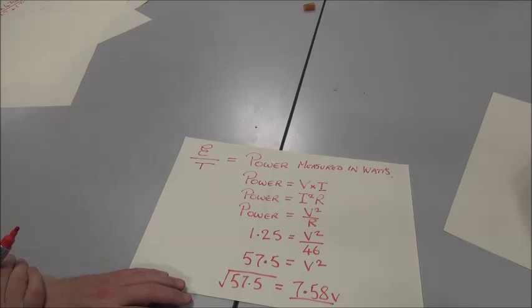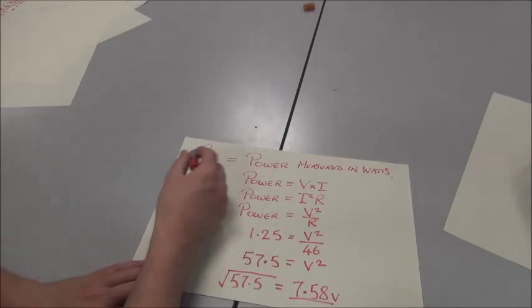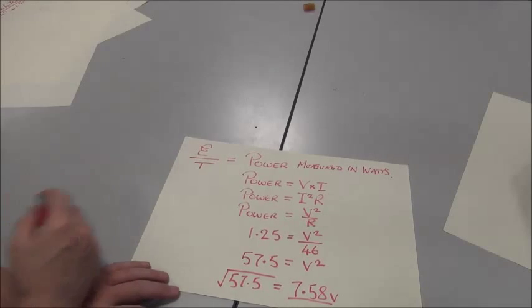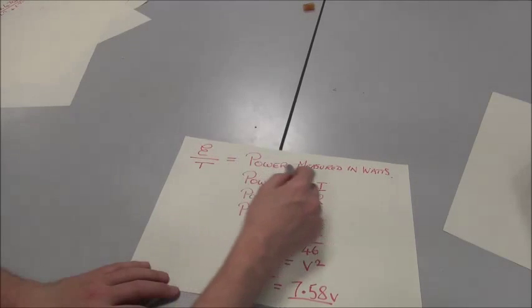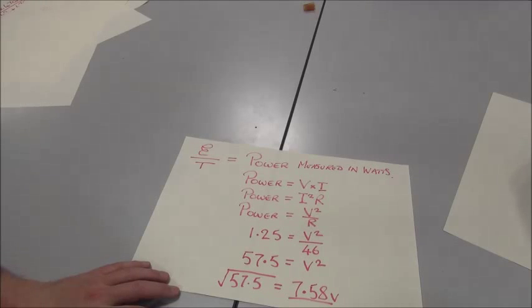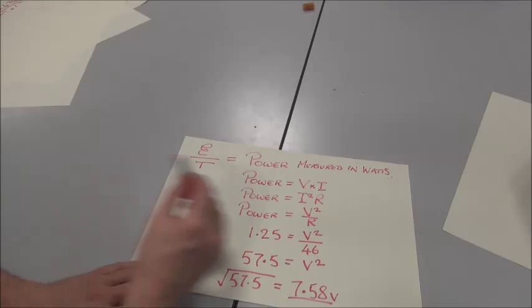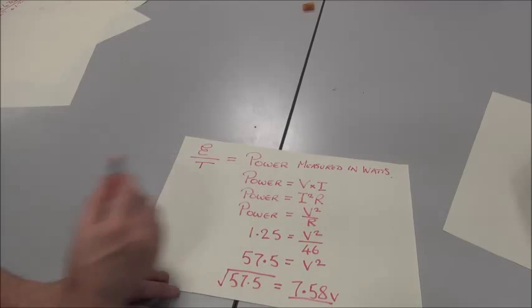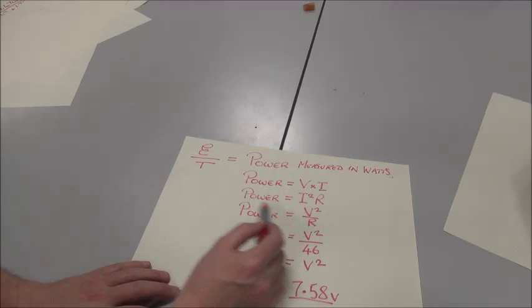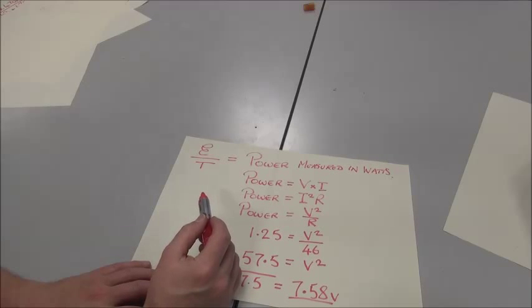When we apply a voltage across an electrical circuit, current flows through the circuit, and work is done by the circuit, and therefore we have a release of energy. If we divide energy by time, we have power, measured in watts. In electrical circuits, there are three main ways of calculating power. We can either calculate voltage times current, or current squared times resistance, or voltage squared divided by resistance.